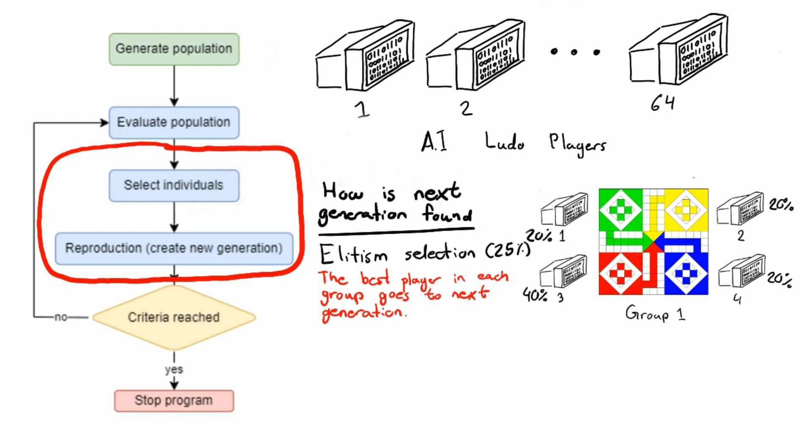This is to ensure that even in the worst case that some randomness leads to the children being worse than their parents, the good genes are still present in the new children. I also make another 25%, again from the best player, however this player will experience mutations so there will be some randomness added to it.